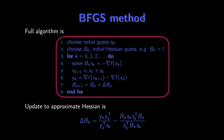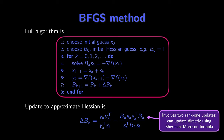That gives us our full BFGS method: we choose our initial guess x_0, choose our initial Hessian guess B_0, then solve the linear system to get step s_k, calculate y_k as the difference in the gradient, and update our approximate Hessian. This matches the exact form shown before we began the derivation. The update to our approximate Hessian involves the sum of two rank-one terms, so we could again apply the Sherman-Morrison formula and update the inverse Hessian instead of the Hessian.